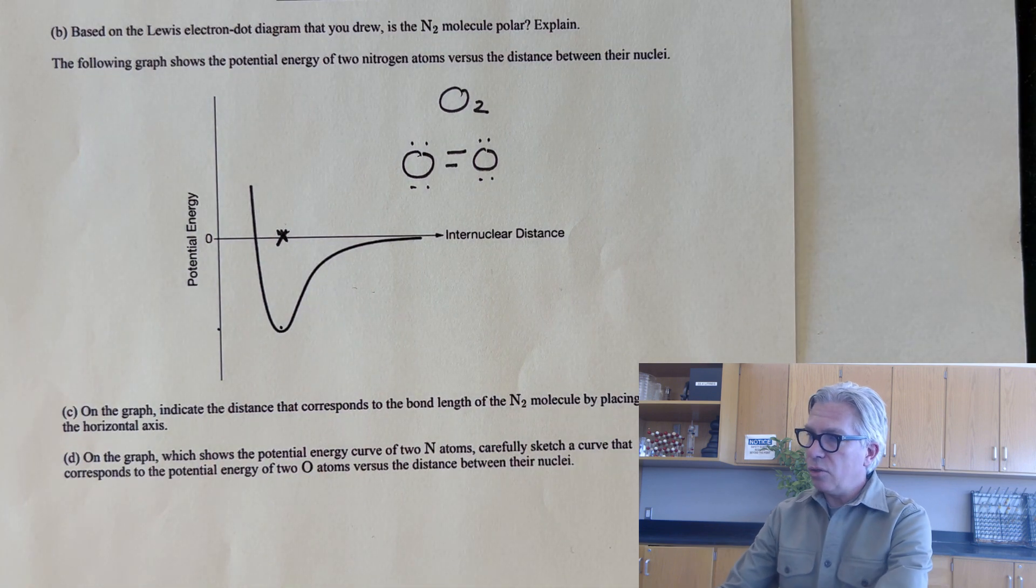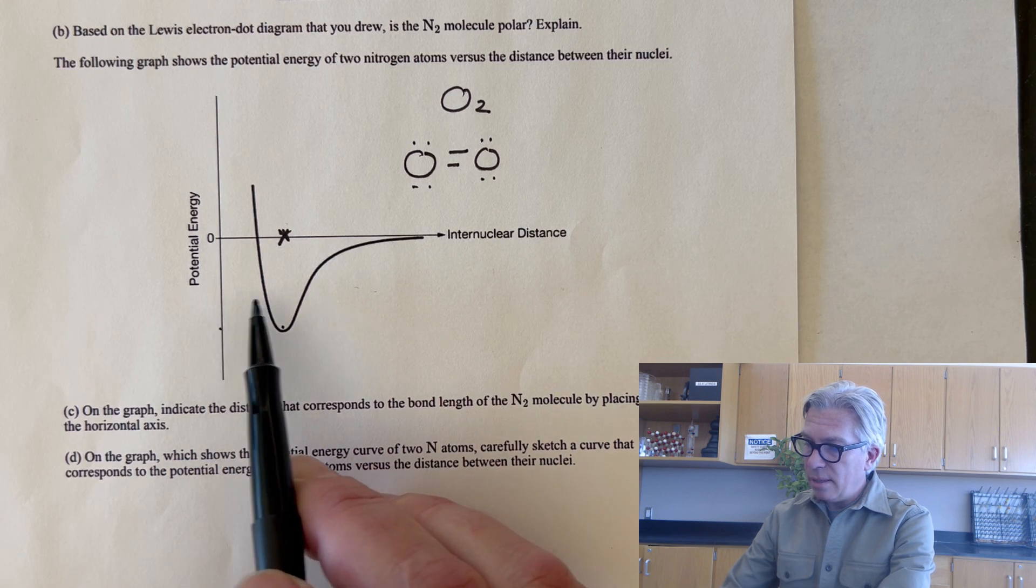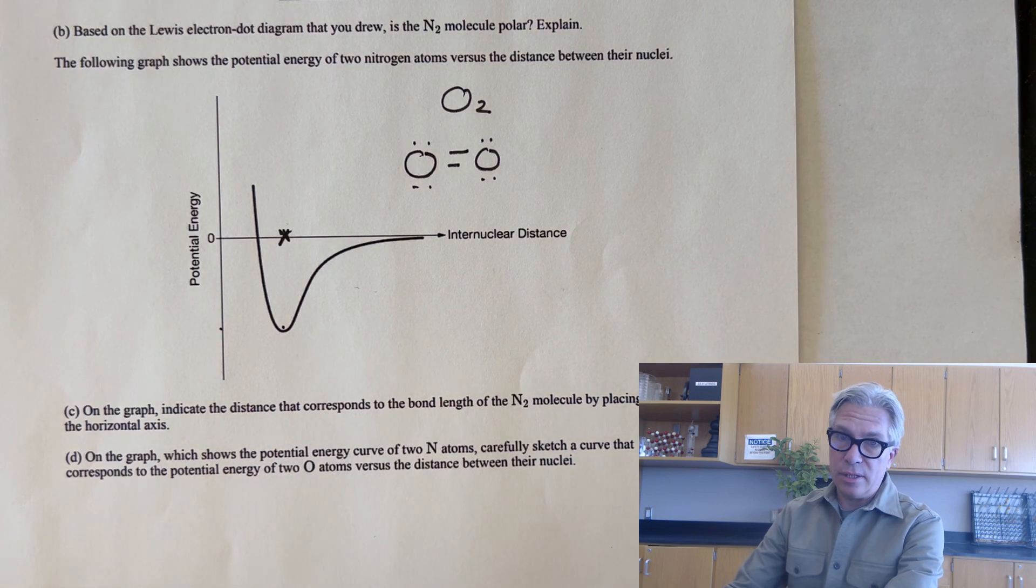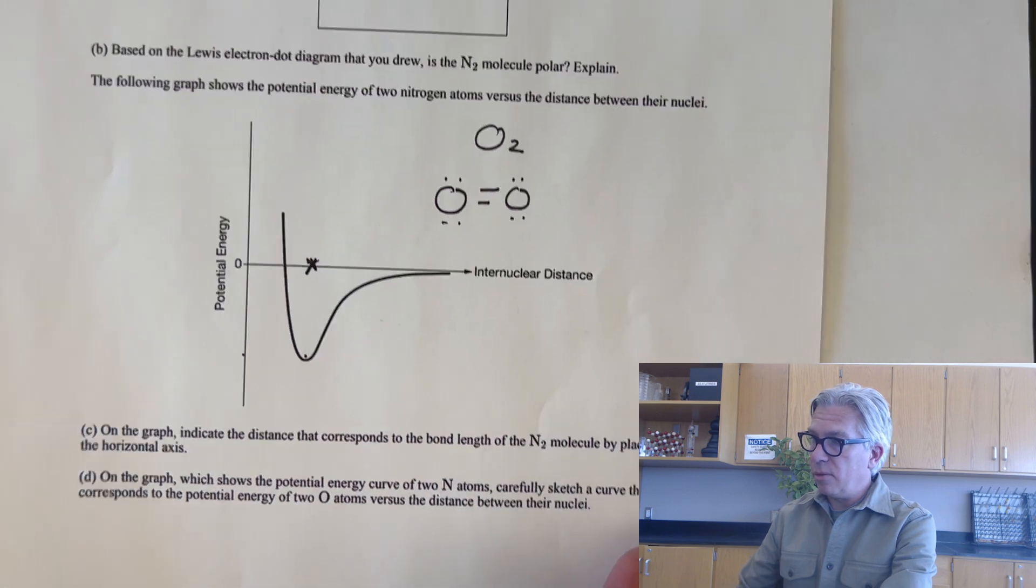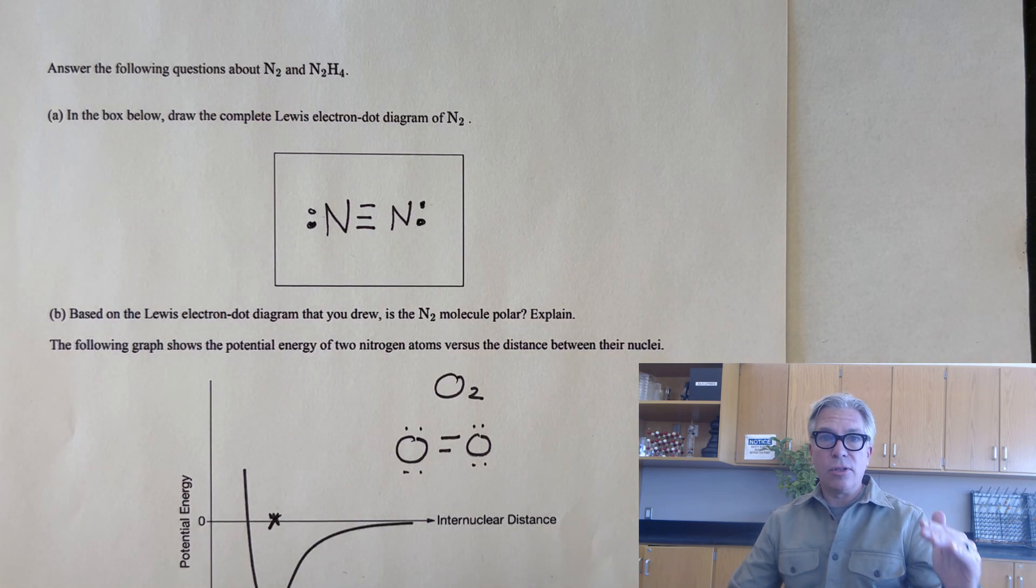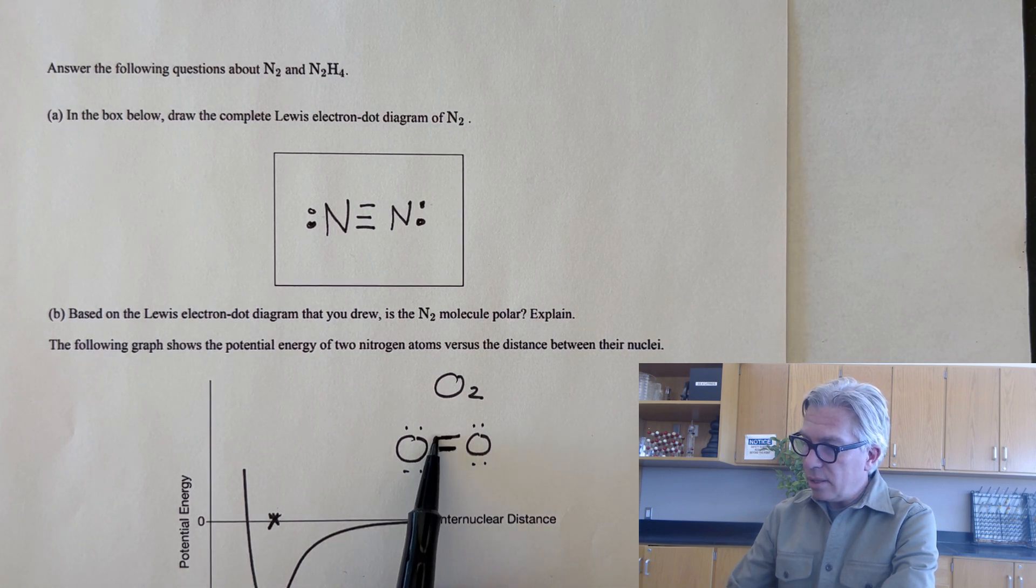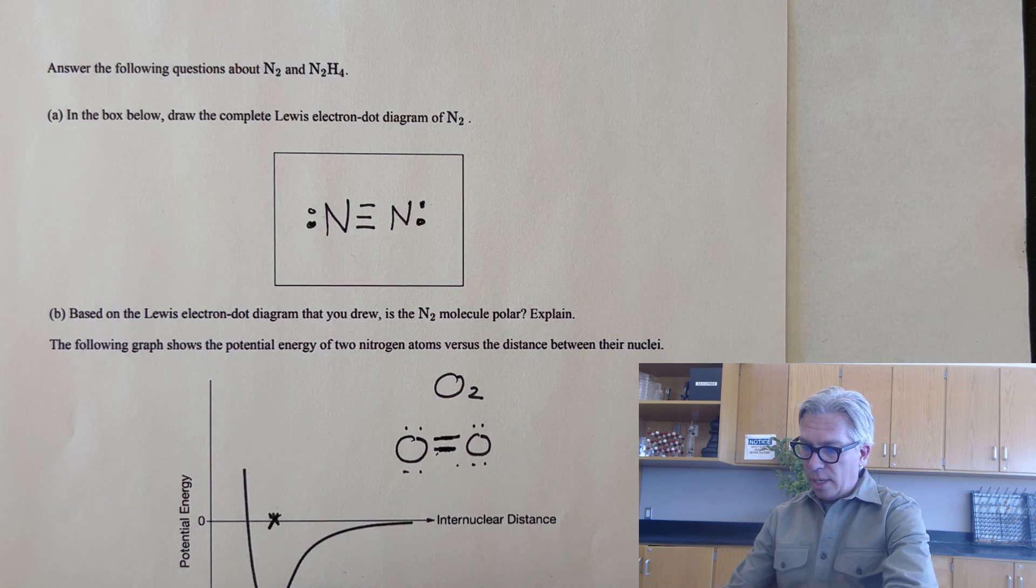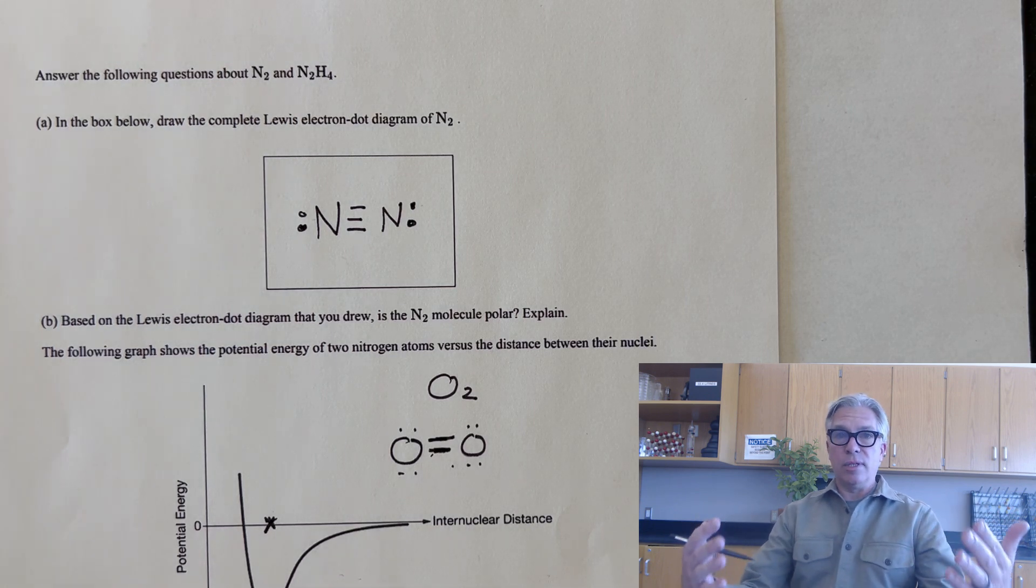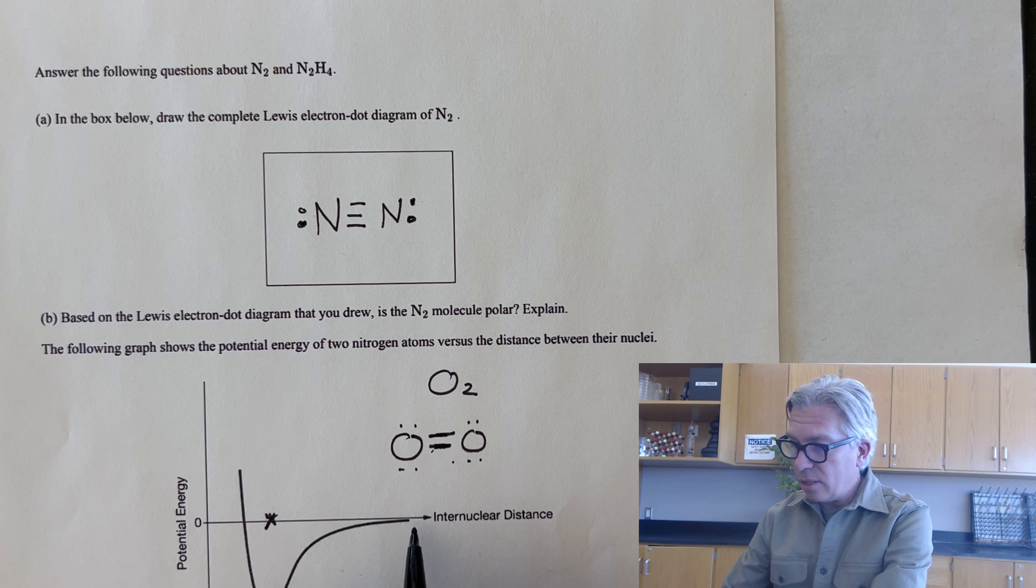So here's the question. Is the bottom part of the curve, the minimum, going to be right, left, or same spot as the nitrogen? And will that minimum be higher, same, or lower than the nitrogens? We have to know two things about double versus triple bonds. First, triple bonds in general are shorter in length than double bonds. The higher the bond order, the shorter the bond length because you've got more electrons pulling those nuclei closer. So I'm expecting the internuclear distance for oxygen to be longer, further to the right. Also, the higher the bond order, the more energy is released. Singles release some energy, doubles release more, triples release more on average. So it's going to give off less energy and have a longer bond length.